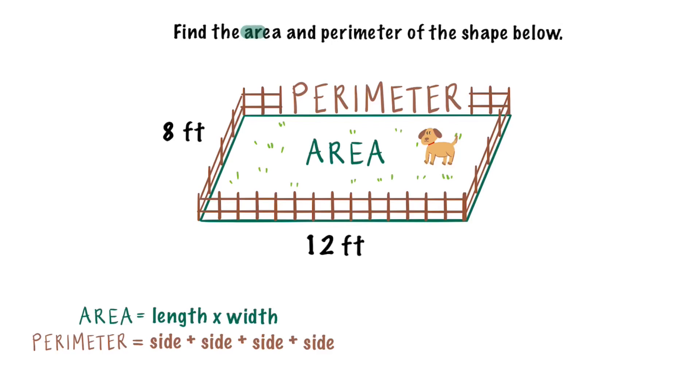Let's start. Find the area and perimeter of the shape below. Remember, area equals length times width.